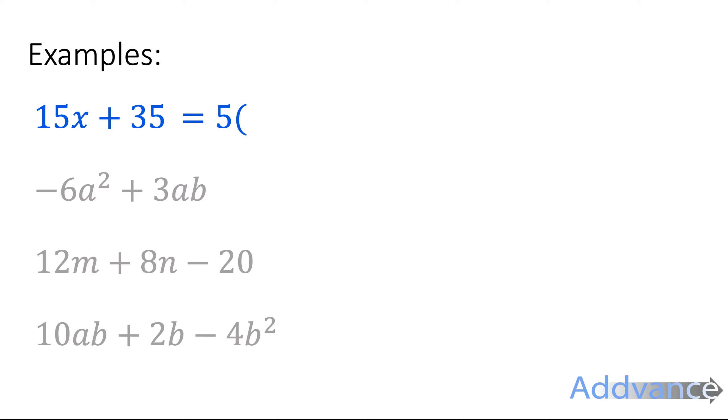Now we know that 5 goes on the outside. What goes on the inside? Well, 5 times 3x will be 15x, 5 times 7 will be 35, and we get 5 times (3x + 7). You should always check your work by expanding those brackets again. 5 times 3x will give you 15x, 5 times 7 will give you 35.